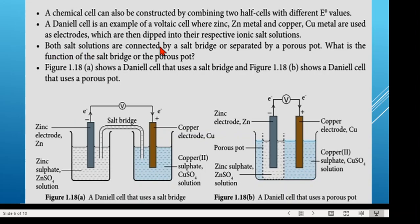Both salt solutions are connected by a salt bridge or separated by a porous pot. In one setup we connect the two solutions with a salt bridge; in another setup we use a porous pot to separate them. The copper(II) sulfate solution (blue) and the zinc sulfate solution are separated by the porous pot, which has pores allowing ions to pass through.